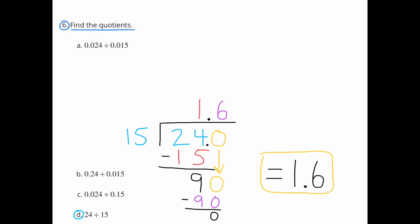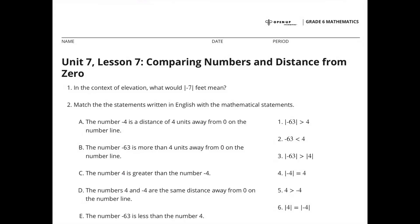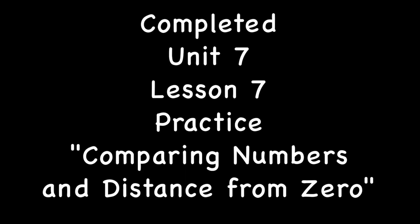D: 24 divided by 15 equals 1 and 6 tenths. Congratulations! You've completed Unit 7, Lesson 7: Comparing Numbers and Distance from Zero.